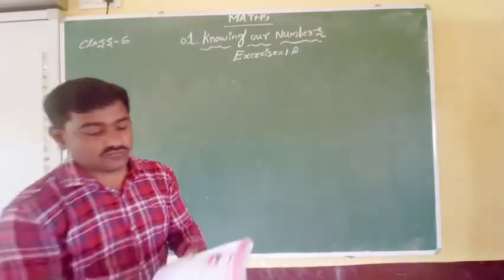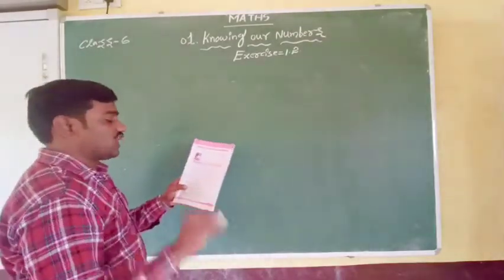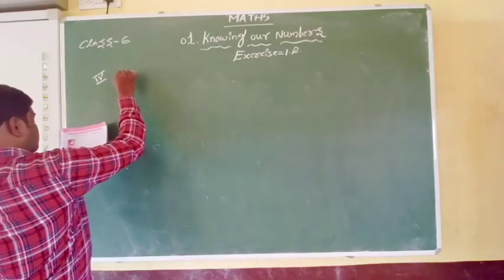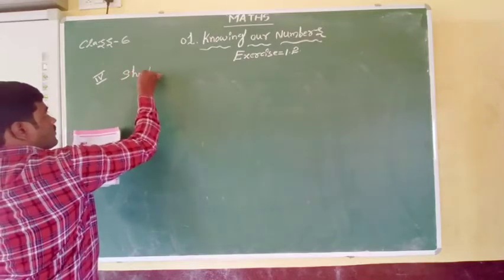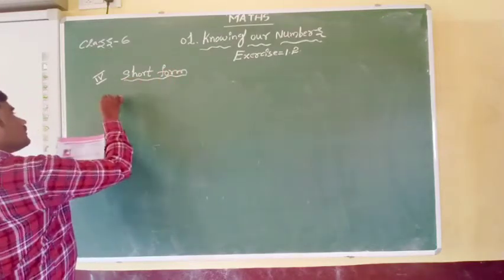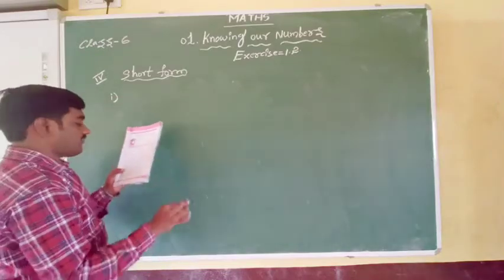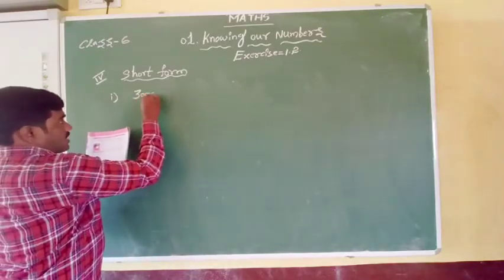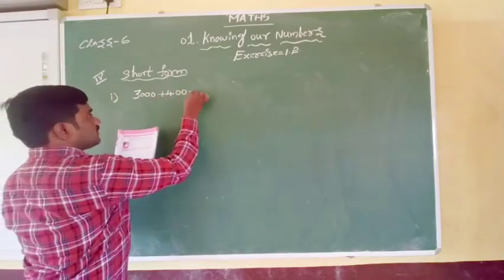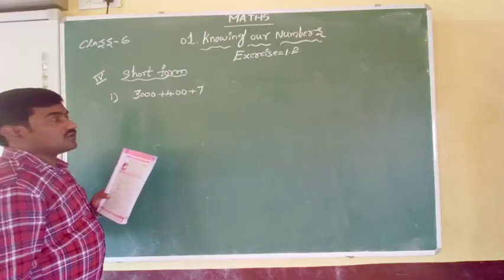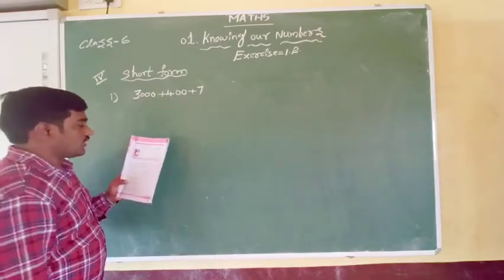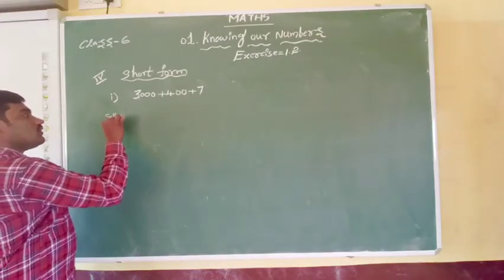Now the fourth bit: write the numbers in short form. The numbers are given in expanded form and we need to convert them. The first question is 3,000 plus 400 plus 7, which equals 3,407. Let me solve this first — it is a very easy way to complete.